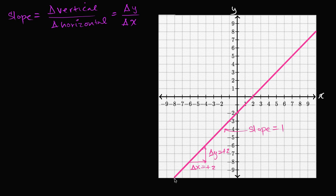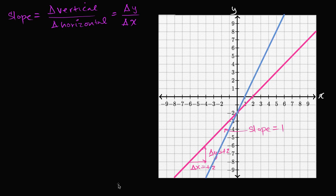A slope of two — for every one that I increase in the x direction, I'm going to increase two in the y direction. So it's going to look like that. You see: if my change in x is one, my change in y is two. So change in y over change in x is two over one — the slope here is two.